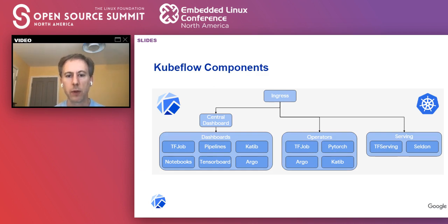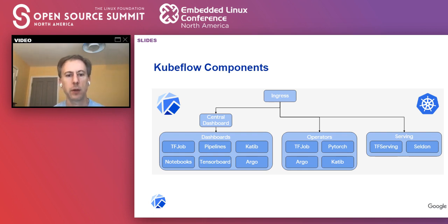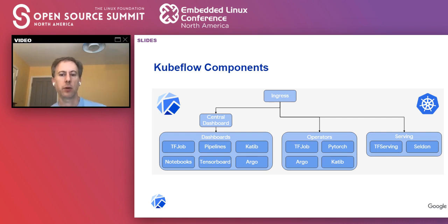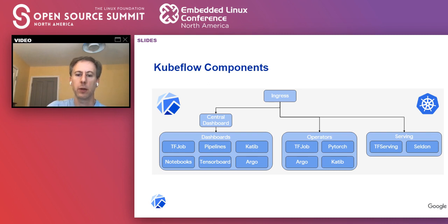Let's look at the components briefly. Any workload coming in goes through an ingress as part of Kubernetes and gets distributed to the right place in the cluster. There are really about three main areas: the dashboard — a user interface where you can run data science notebooks, write code, and view your pipelines; the operators where you do the heavy lifting of running the jobs and training jobs; and serving, where you host the model in your Kubernetes environment.